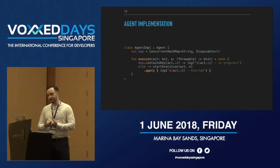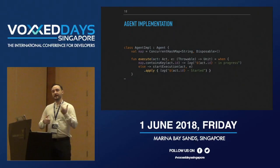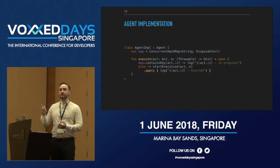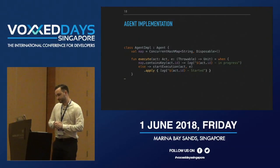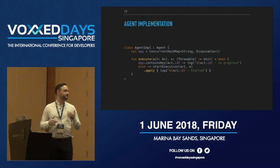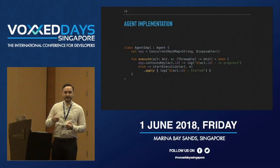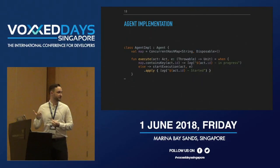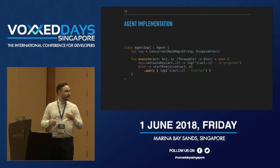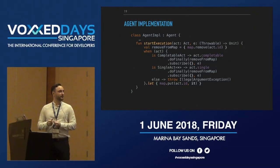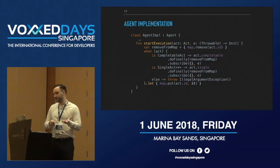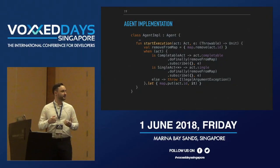For the Agent implementation, we create a simple map containing the job ID and a Disposable — a link to our job that allows us to cancel it and check if it's been cancelled. The implementation is straightforward: we check if the current map contains the key with the job's ID. If the ID is already present, we do nothing; if not, we launch the job. This is how we prevent duplicated jobs from being launched. Since we use RxJava, we subscribe to start the asynchronous job.